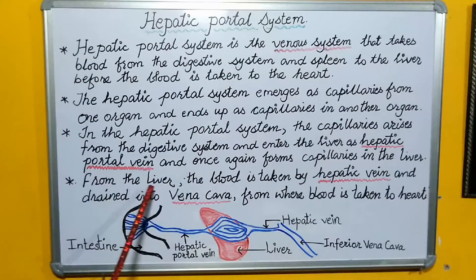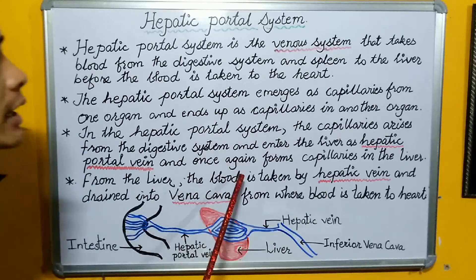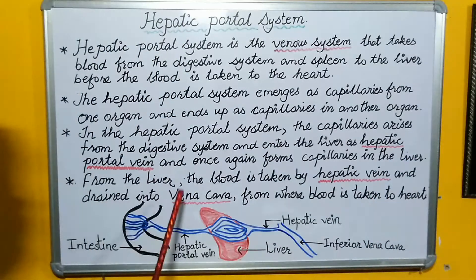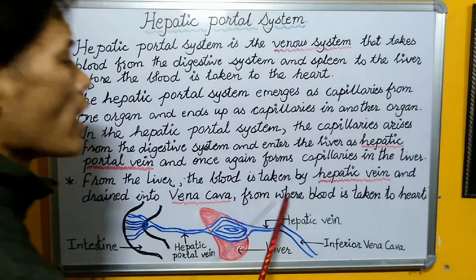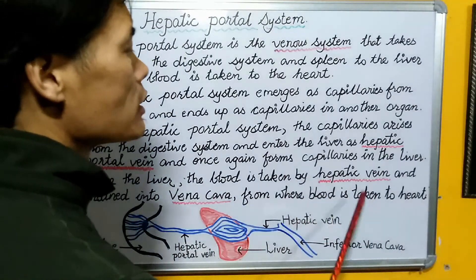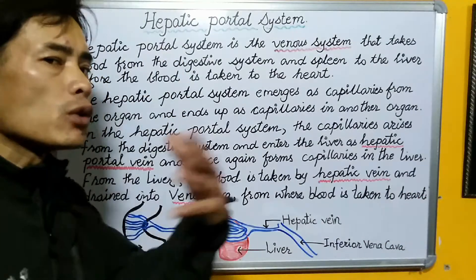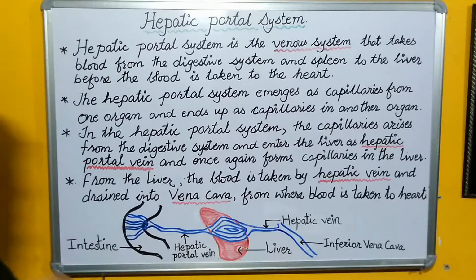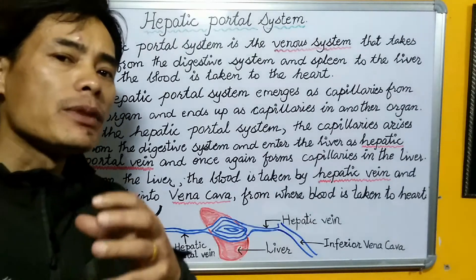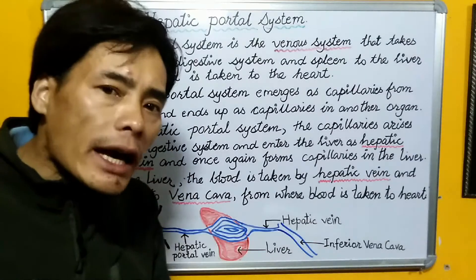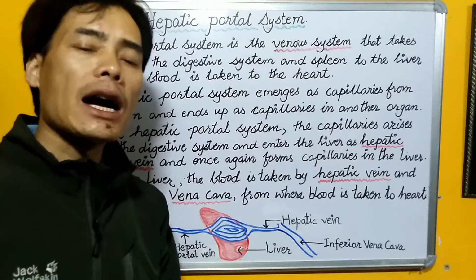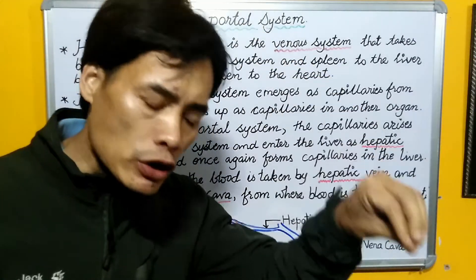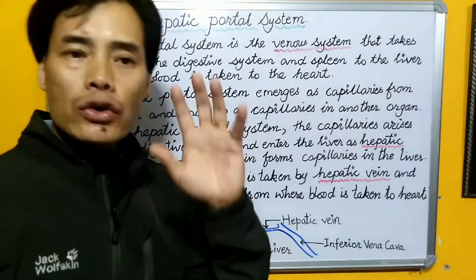From the liver, the blood is taken by the hepatic vein and drained into the vena cava, from where blood is taken to the heart. As stated in the beginning, ultimately the blood from the different organs has to be collected by the vena cava, which then drains the blood into the heart.